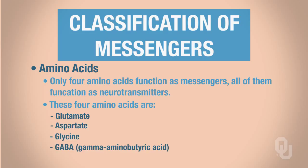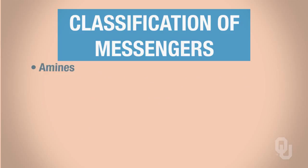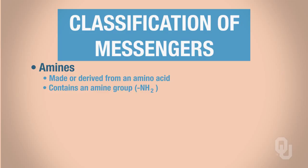Remember that we have twenty different amino acids; however, only four are going to be functioning as neurotransmitters. Then we move into the amine chemical class. The amines are all going to be derived from an amino acid, and the reason they're placed into this class is that they all contain the amine group, NH2.